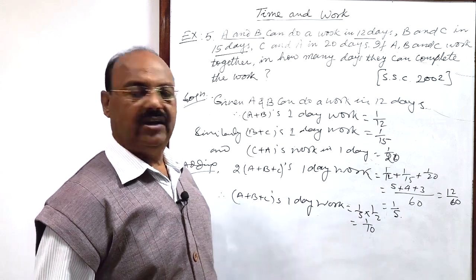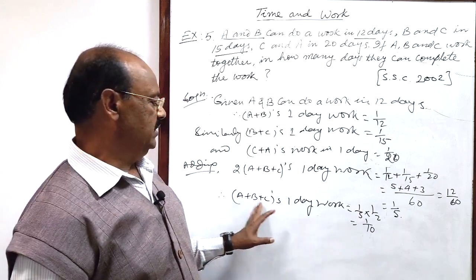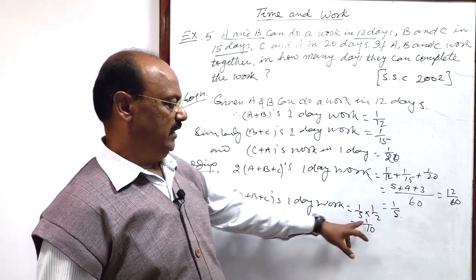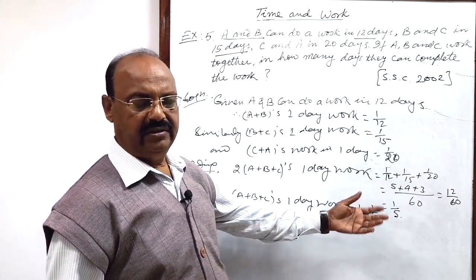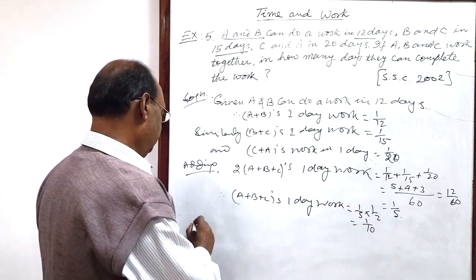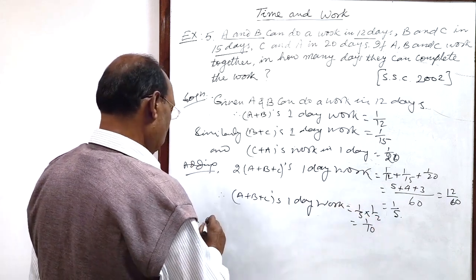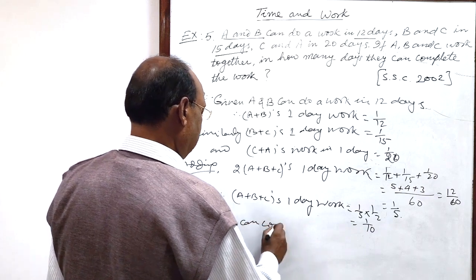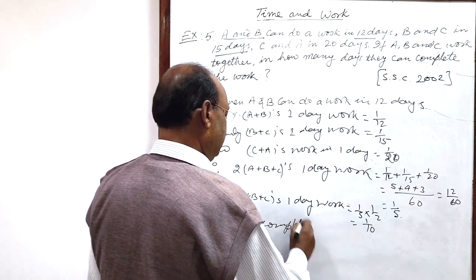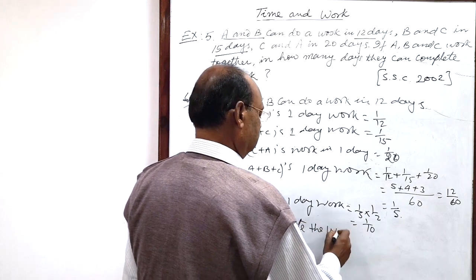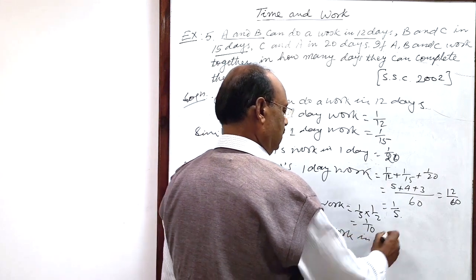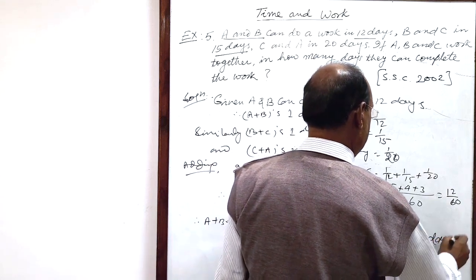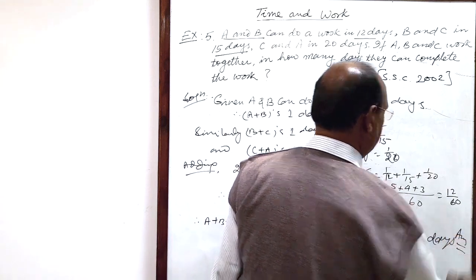So in how many days can they complete this work? When A, B, C work together, the reciprocal of 1 by 10 is 10 days. Therefore, A plus B plus C can complete the work in 10 days. This is the answer.